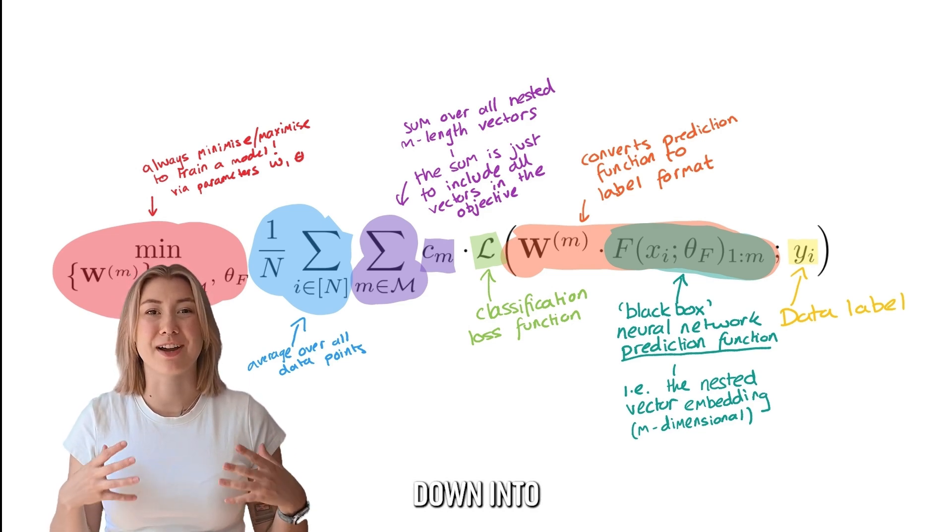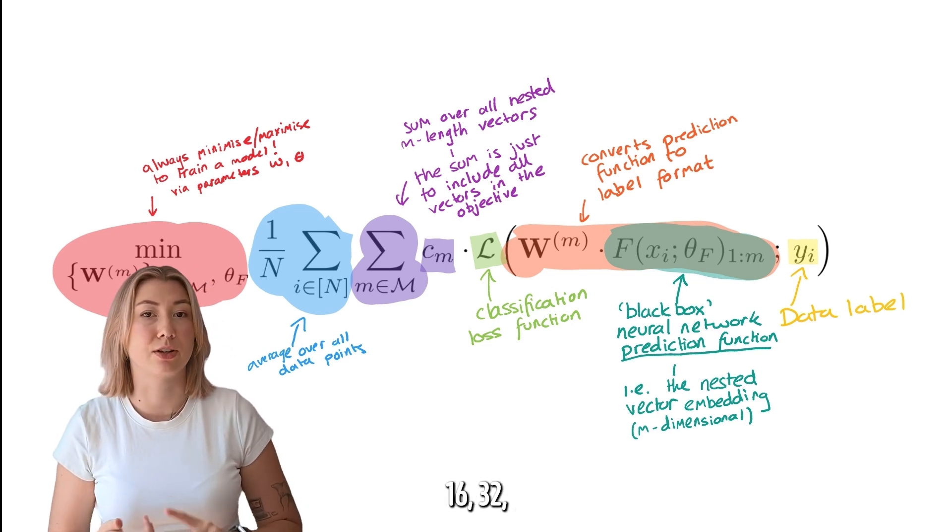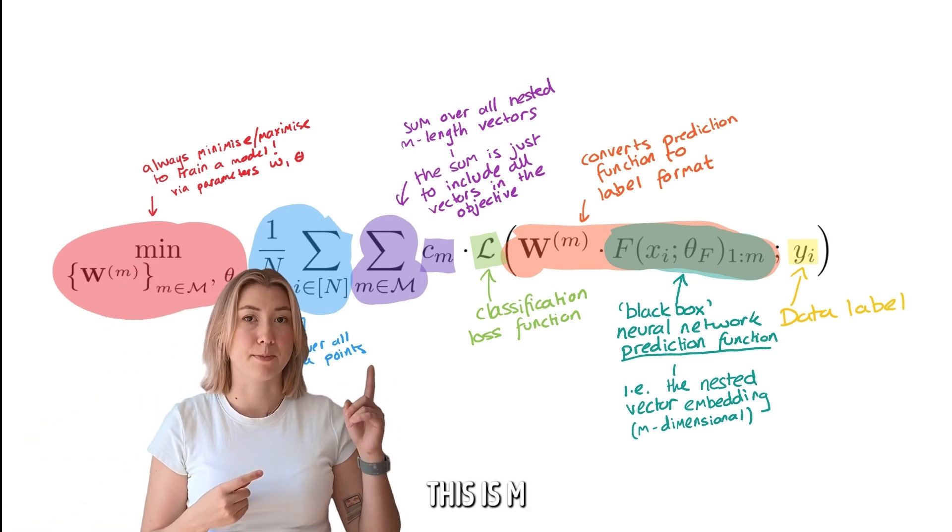So how does this work? We can break the vector down into individual dimension ranges, for example, up to 8 dimensions and up to 16, 32, and so on. This is m in the equation.